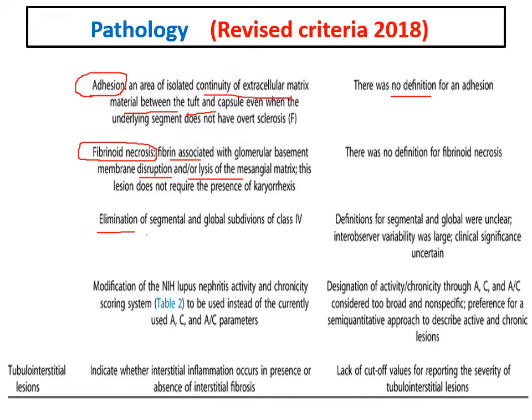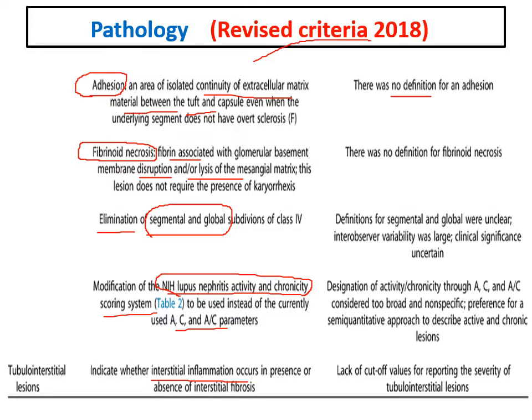The 2018 revised criteria also recommend removing the segmental and global subdivisions. They put modifications to the NIH activity and chronicity scoring system, replacing the previous A and C designations with activity and chronicity indices from the National Institute of Health. Additionally, it is now recommended to comment on whether interstitial inflammation and/or fibrosis are present.